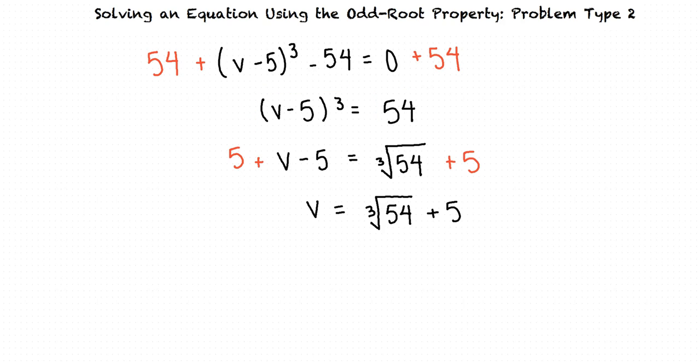I think the cube root of 54 can be simplified to the cube root of 27 times 2. Then, since 27 is a perfect cube, we can rewrite this as 3 cube root 2. Exactly. This results in a final answer of v equals 3 cube root 2 plus 5.